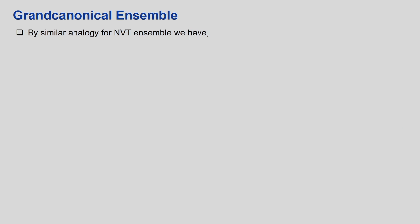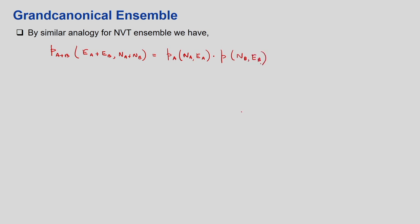With a similar approach to the NVT ensemble, I can write P(E_{A+B}, N_{A+B}) = P_A(E_A, N_A) × P_B(E_B, N_B). Now we do derivatives. First we do a derivative with respect to E_A, then with respect to E_B. Then we do the same approach for number of molecules N_A and N_B.